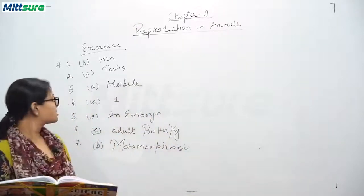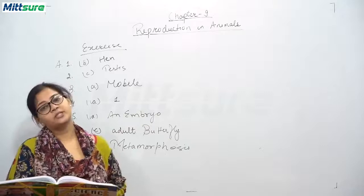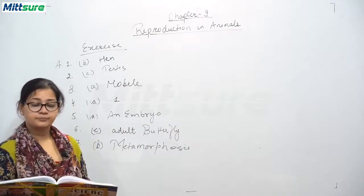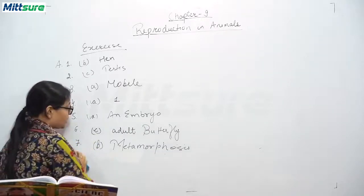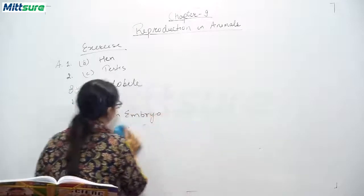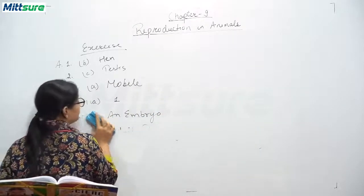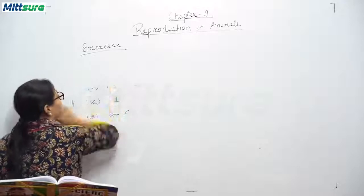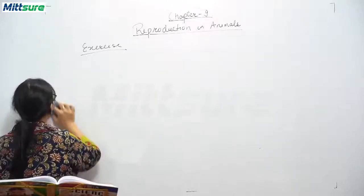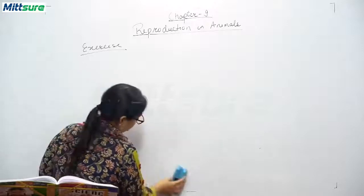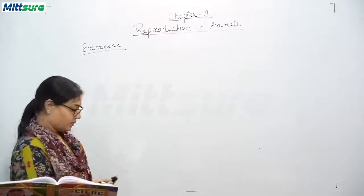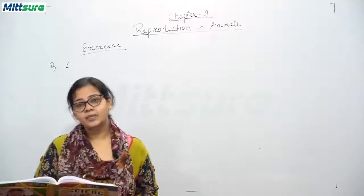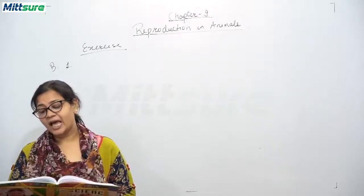The answers for Section A — read the following questions carefully and tick the right options — are now complete. Please note down the answers. Now we will be doing Section B: fill in the blanks with appropriate words. First: two animals which lay eggs are blank and blank.